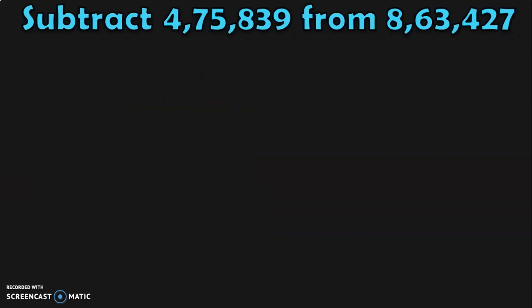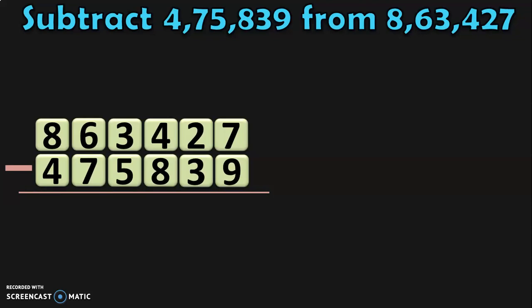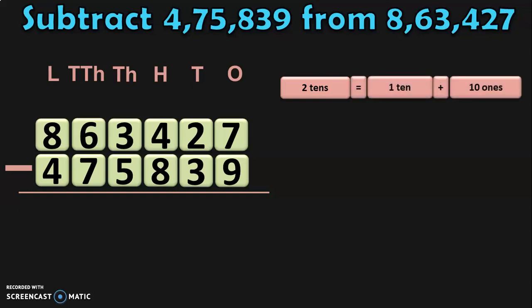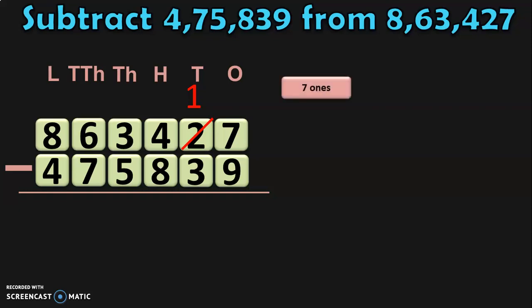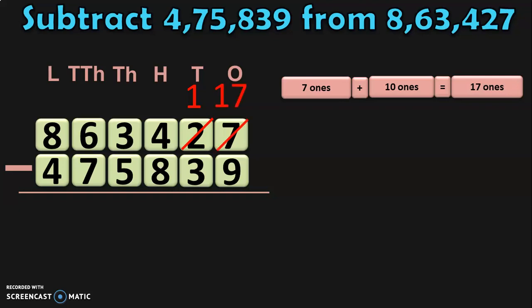In the next sum, we are going to see how to regroup the ten thousands place and the lakhs place. Subtract 4,75,839 from 8,63,427. Write down the numbers one below the other and write down the place values. Begin the subtraction from the ones place: 7 minus 9. Since 9 is greater than 7, move to the tens place where you have 2 tens. 2 tens can be regrouped as 1 ten plus 10 ones. Retain the 1 ten and take the 10 ones to the ones place. 7 ones plus 10 ones gives you 17 ones. 17 minus 9 gives you 8.